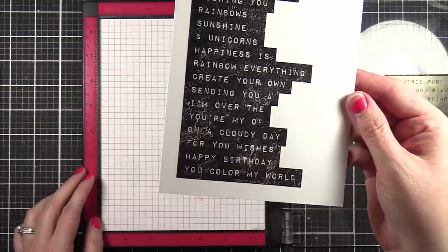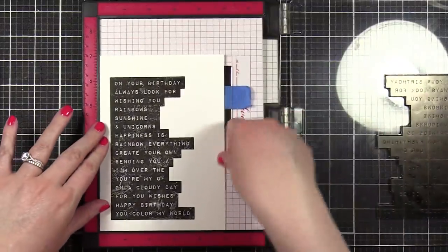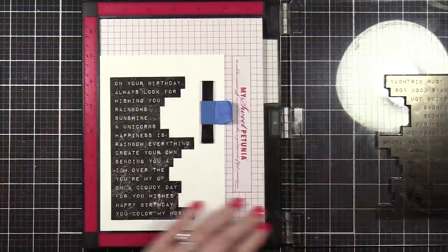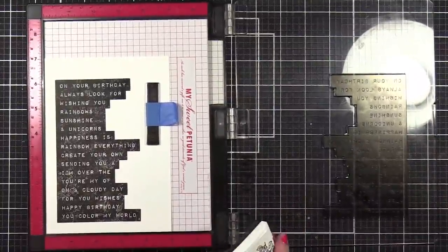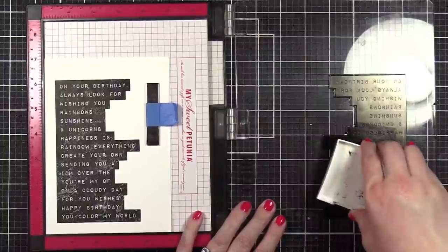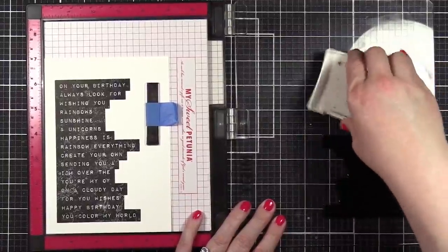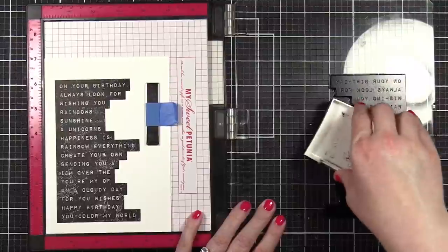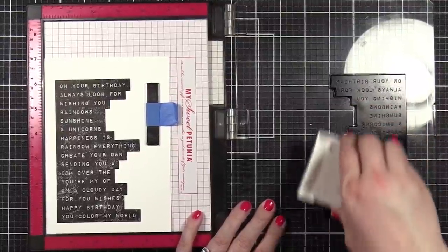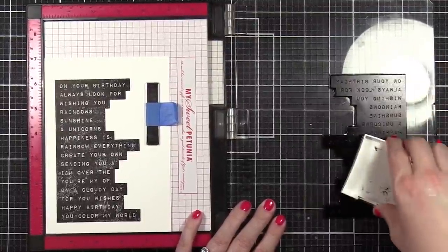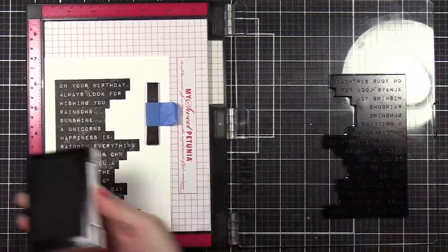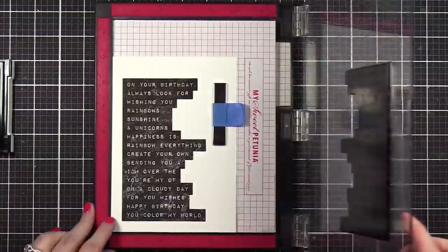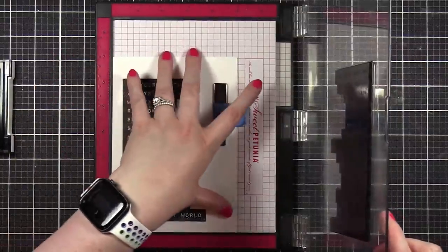Some of it's pretty splotchy, you see that? This is why we like our Misti, because we can ink that up and stamp it again and get an even better impression. Really squishing my ink pad, trying to get lots of ink on there. I've had this same VersaFine ink pad for a couple years now, it's still going strong, but I can tell sometimes it's on its last leg.